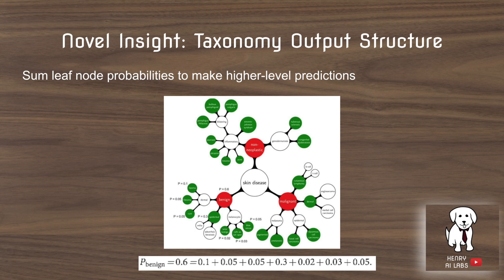The novel insight in this research paper is to construct a taxonomy of the output structure, an idea also seen in papers like Word2Vec with hierarchical output spaces. The convolutional network doesn't directly predict classes; rather, it predicts probabilities for each class, and these classes are traversed upwards and summed to make predictions. All the leaf nodes under something like benign — things like lipoma, fibroma, and cysts — are summed up and aggregated to produce the final benign prediction.